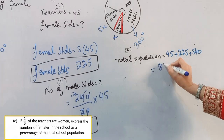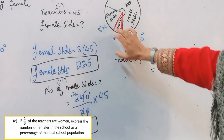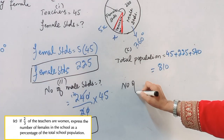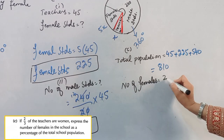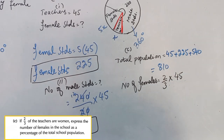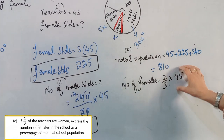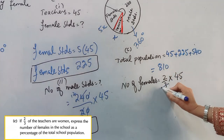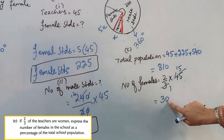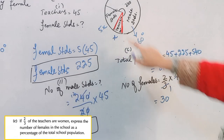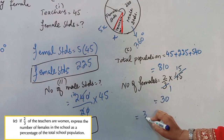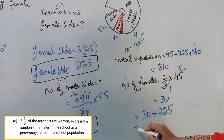Total population is 810. Next, we find the number of females. 2/3 of teachers are women, and teachers are 45. So female teachers equals (2/3) × 45 equals 30. Total females equals female students 225 plus female teachers 30, which gives 255.